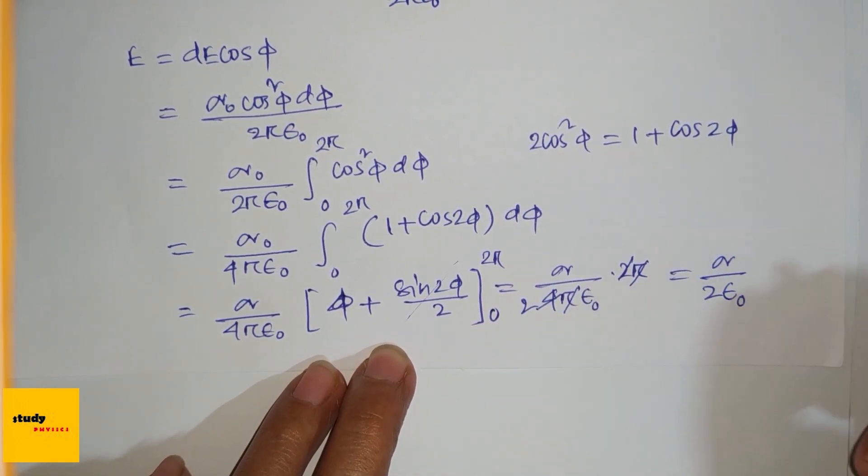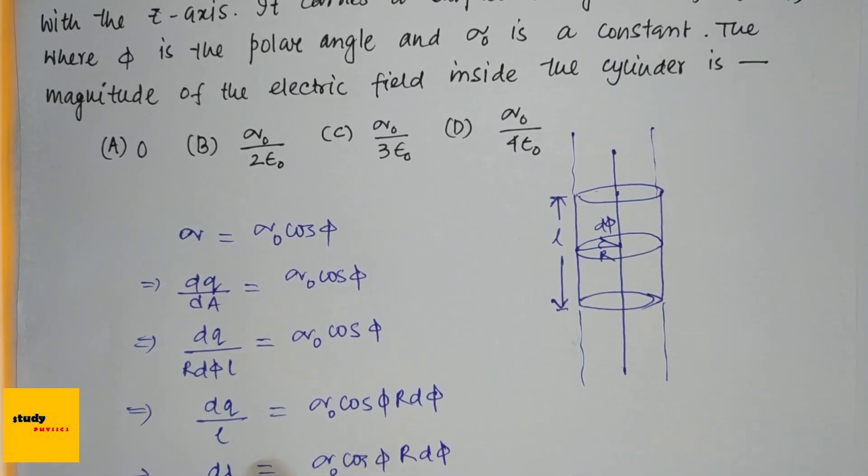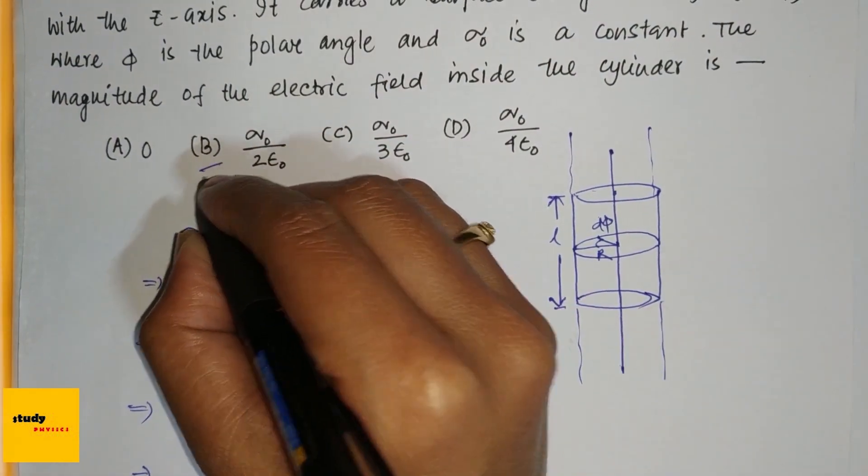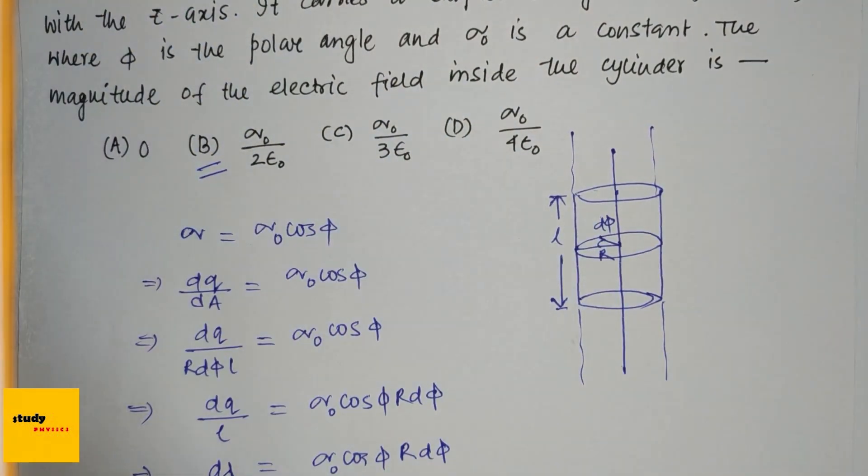Pi will cancel out, leaving 2. So the correct answer is sigma_0 divided by 2 epsilon_0. Thank you for watching this video. Please like, share, and subscribe.